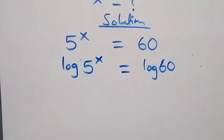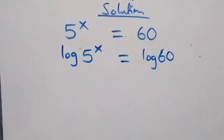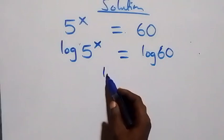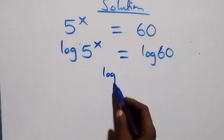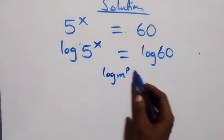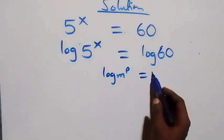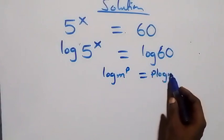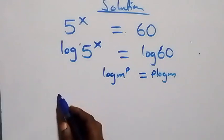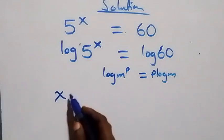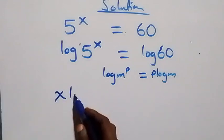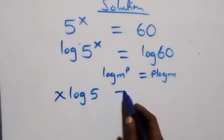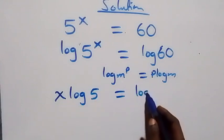Here we apply the power rule of logarithms, where log(m^p) equals p·log(m). So the equation becomes x·log5 equals log60.